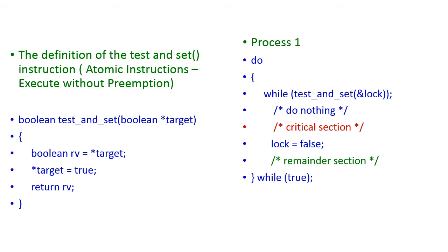Let us see the definition of the test-and-set method. The test-and-set method has one argument of type boolean, which is a pointer variable — target is a pointer variable. The test-and-set will return a boolean value. Here we have one local variable rv. The value of target will be assigned to rv.